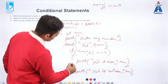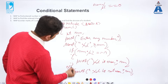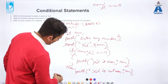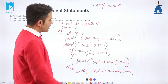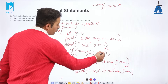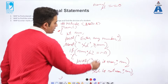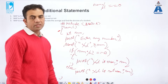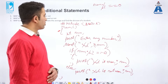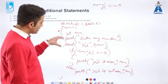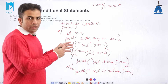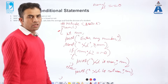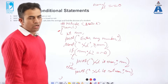We close all the braces — the if block, else block, and the main function. This is a simple program using the if-else statement to check whether the entered number is even or not. You can type it in your IDE and check what output comes.